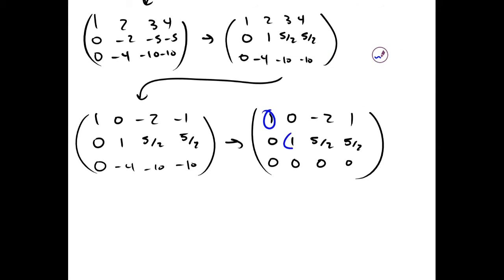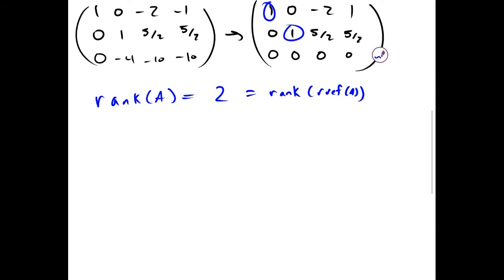Since there are two leading ones, the rank of A equals 2, because the rank of the reduced row echelon form of A also equals 2. And since the rank of A equals the dimension of the image of A, the dimension of the image of A is 2.